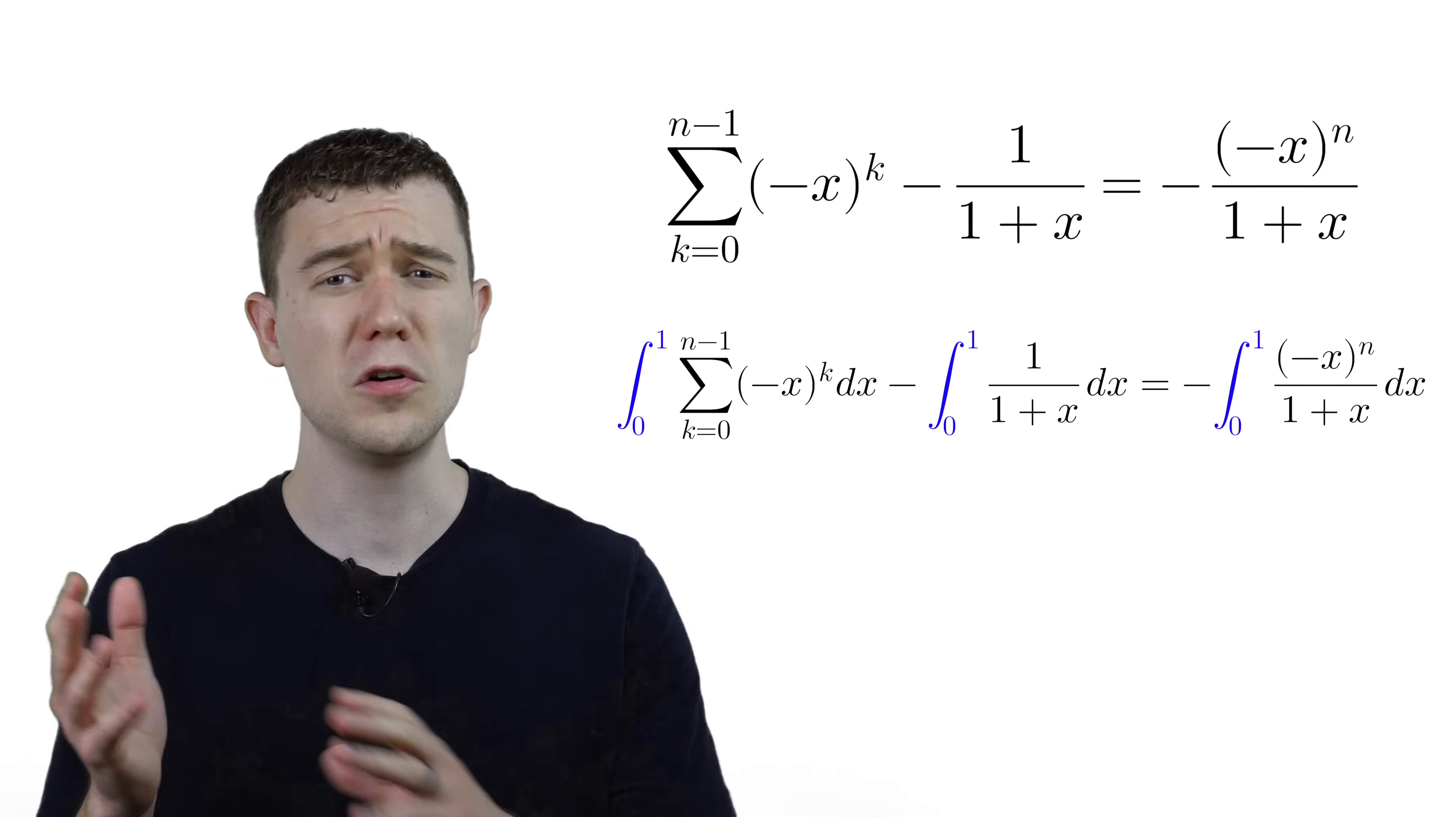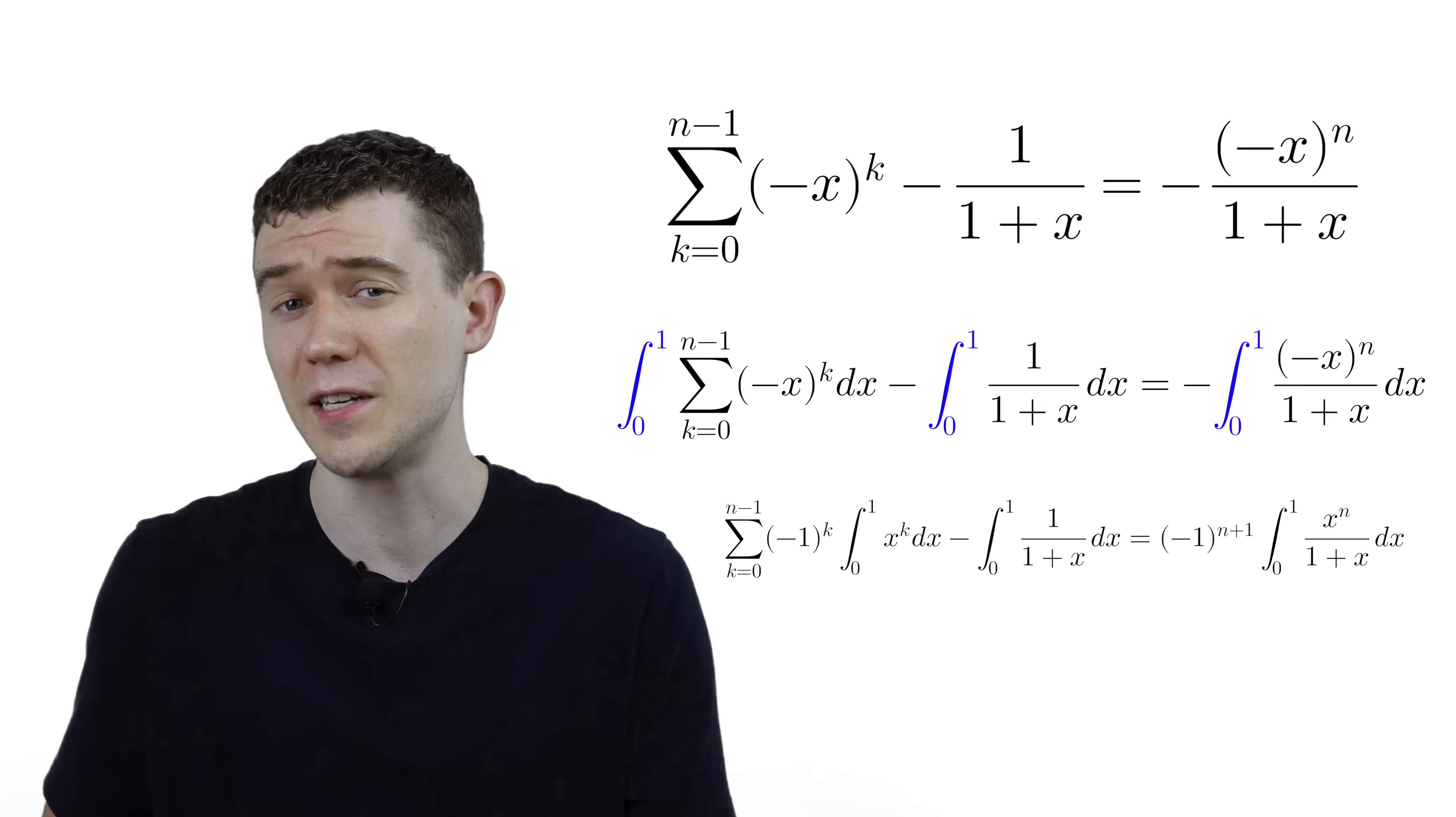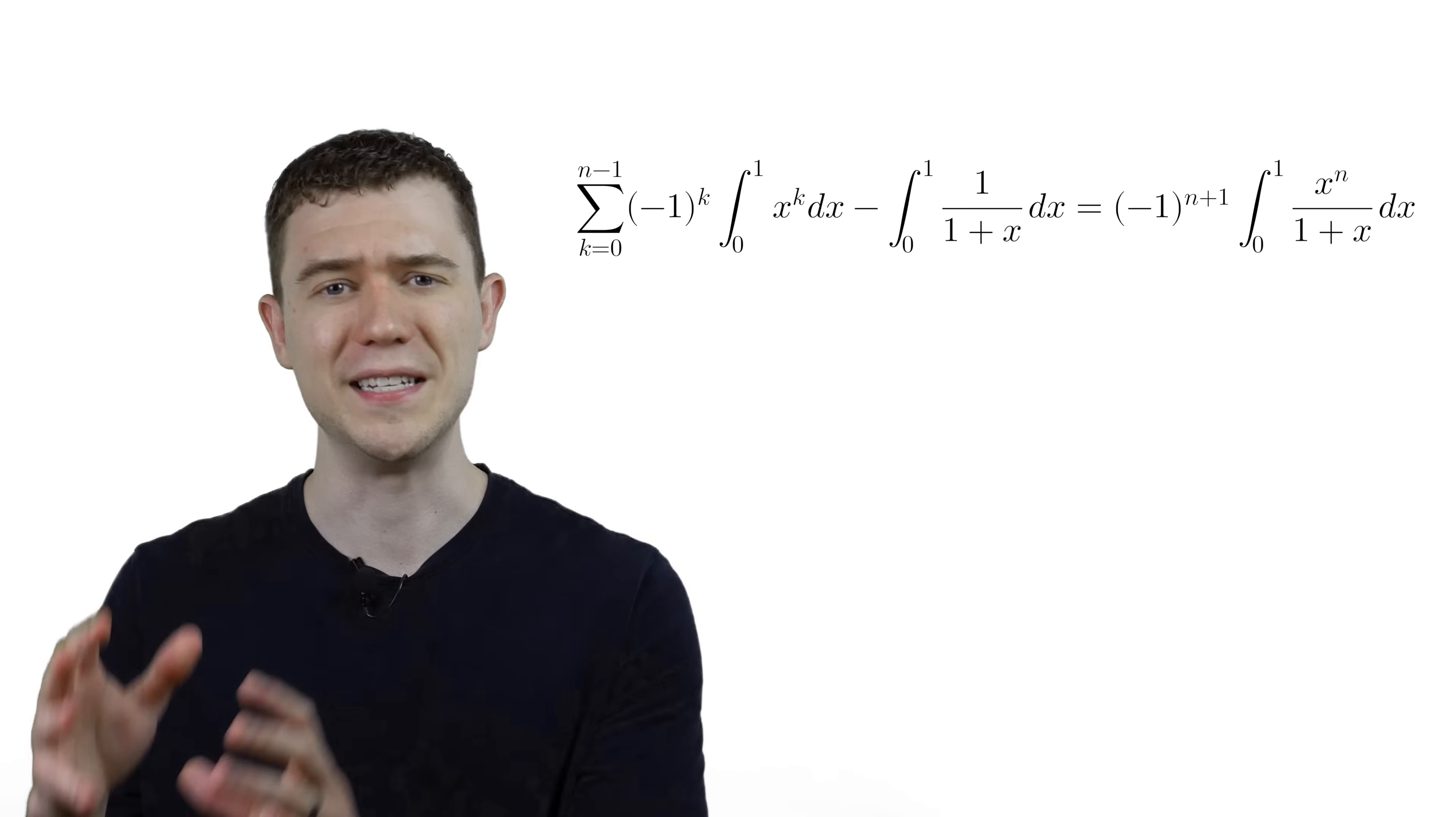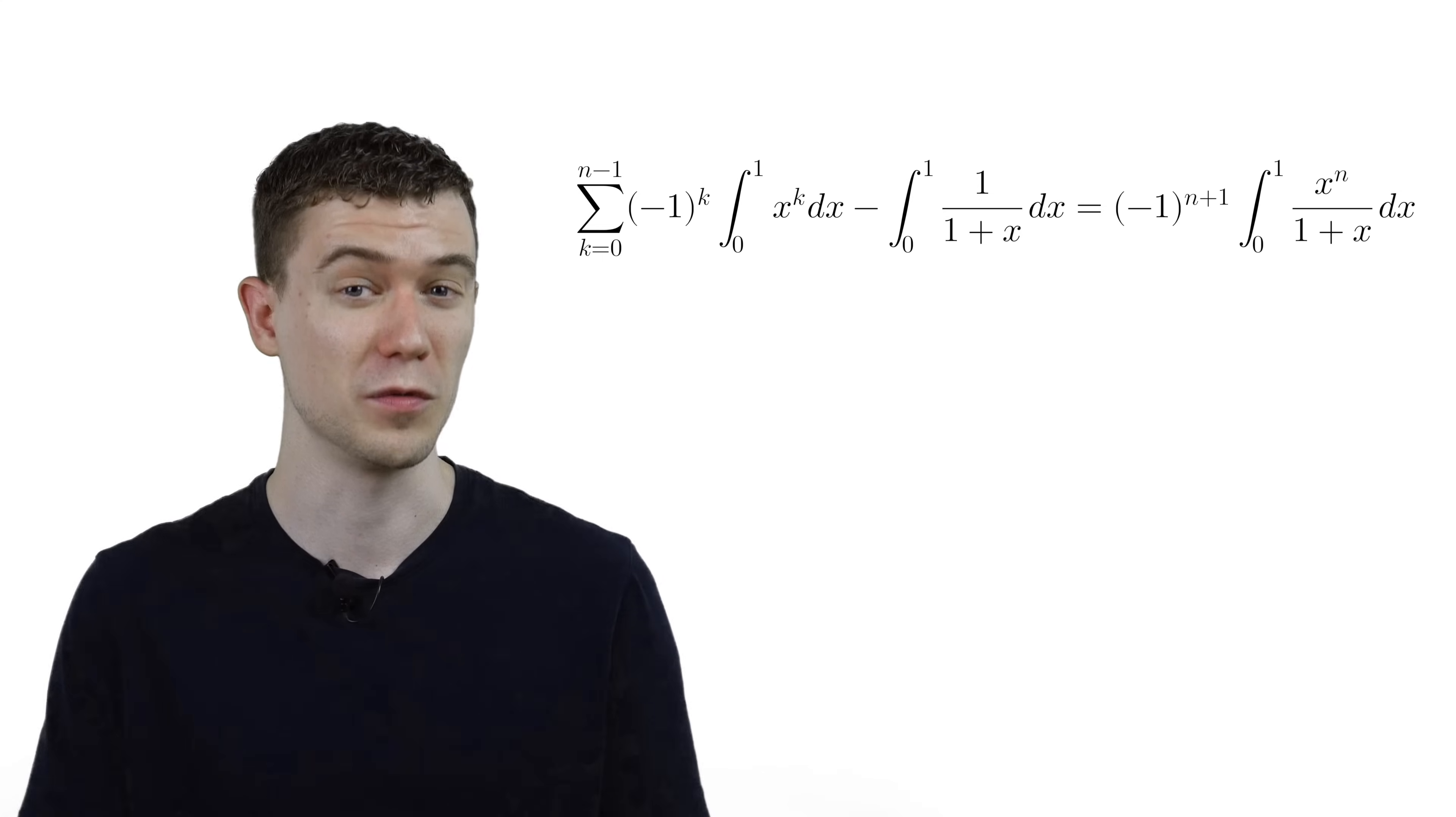One small thing to note is that we can pull this sum out of the integral with basically no justification since it's a finite sum. This might be a little clunky, but let's just keep in mind the differential here is dx, so any letters other than x are constant with respect to that variable.